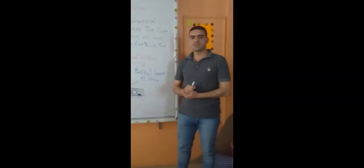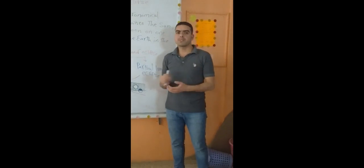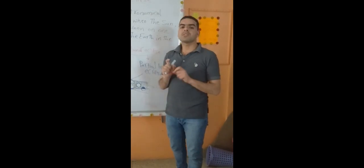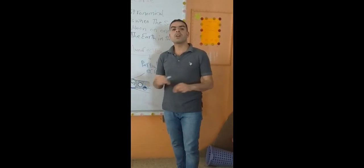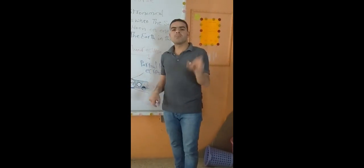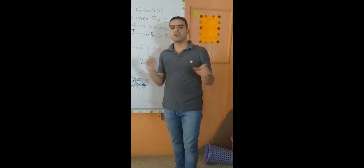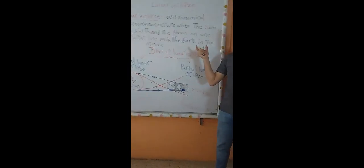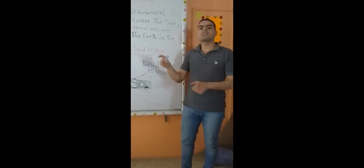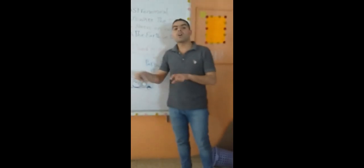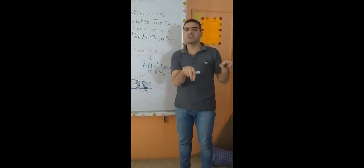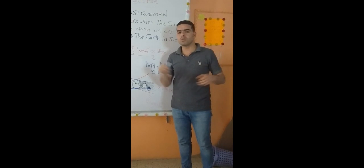But first, let's remember what solar eclipse is. Solar eclipse is an astronomical phenomenon that occurs when the sun, the Earth, and the moon are located in one straight line, with the moon in the middle between the sun and the Earth. Lunar eclipse is an astronomical phenomenon where the sun, the Earth, and the moon are located in one straight line, but with the Earth in the middle between the sun and the moon.